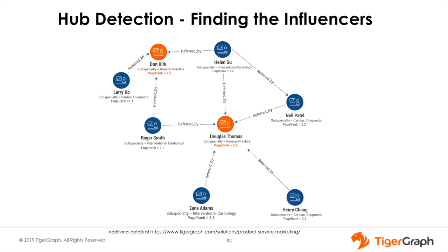PageRank creates a unique ranking for each physician. Dr. Douglas Thomas with a PageRank of 3.9 is the most influential physician driving referrals for cardiac care in the East San Jose area. Dr. Don Kirk with a PageRank of 2.5 is the second most influential physician for the area. As a pharmaceutical company launches a new or improved drug for cardiac care, they can target these hubs of influence — Dr. Douglas Thomas and Dr. Don Kirk — for the East San Jose area, knowing these influencers will share the research and details on how it will benefit their patient population within the referral network. A healthcare organization can also work with them on updating guidelines for cardiac care, including new modalities and drugs with higher efficacy and better outcomes for the patient population.